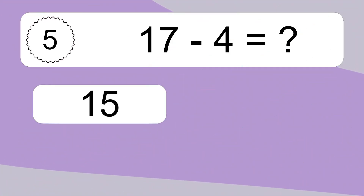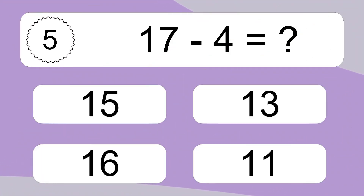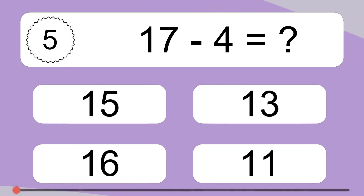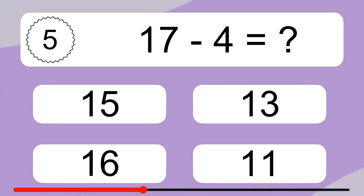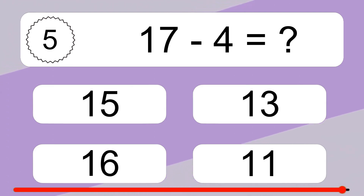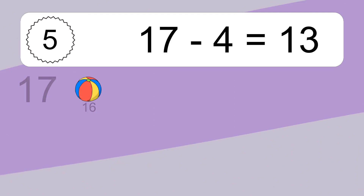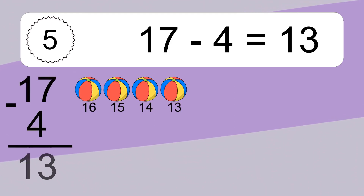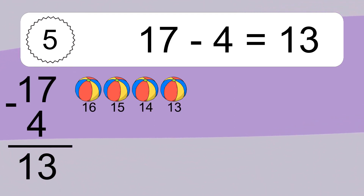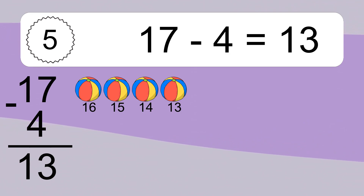17 minus 4 equals what? 17 minus 4 equals 13. Let's count it. 16, 15, 14, 13.